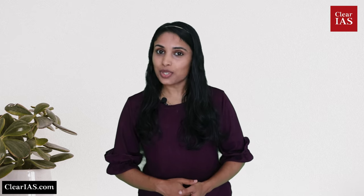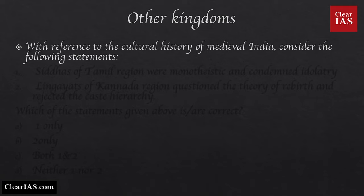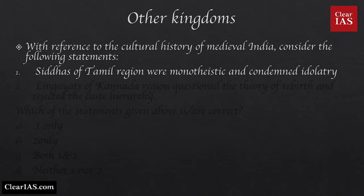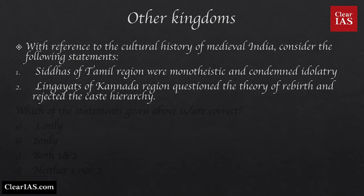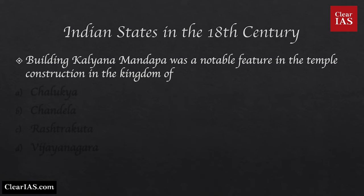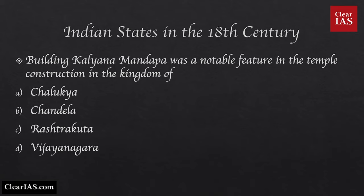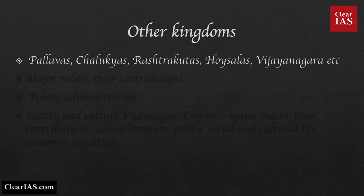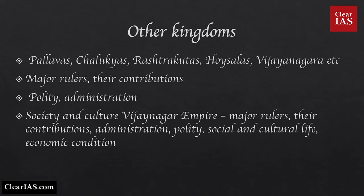Next are provincial kingdoms like Chalukyas, Pallavas, Rashtrakutas, Vijayanagara — among which the Vijayanagara kingdom is very important. Sample questions: Siddhas of Tamil region were monotheistic and condemned idolatry; Lingayats of Kannada region questioned the theory of rebirth and rejected caste hierarchy — which is correct? Building Kalyana Mandapa was a notable feature in which kingdom — Chalukya, Chandela, Rashtrakuta, or Vijayanagara? Learn about Pallavas, Chalukyas, Rashtrakutas, Hoysalas, major rulers and contributions, polity, administration, economy, society and culture.